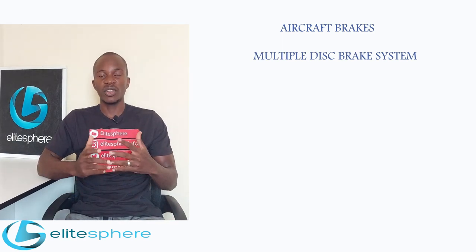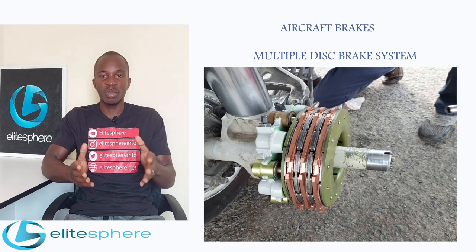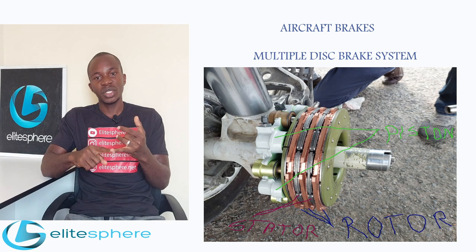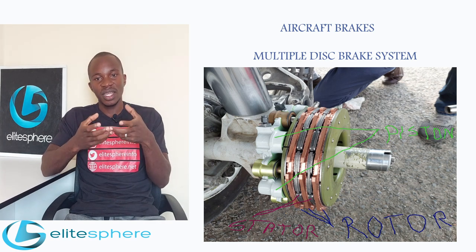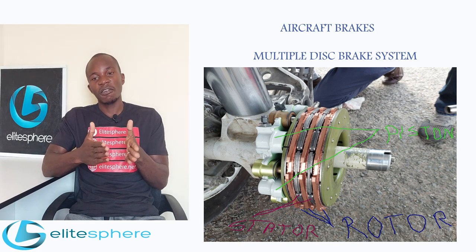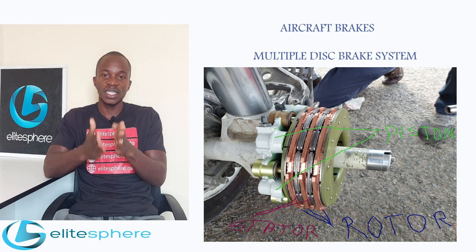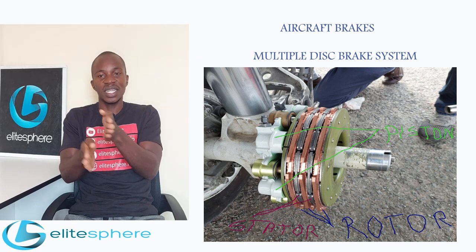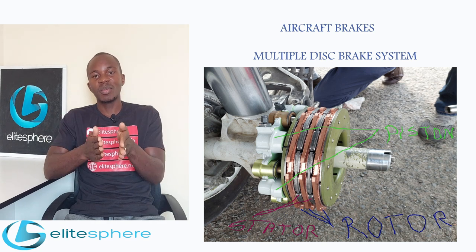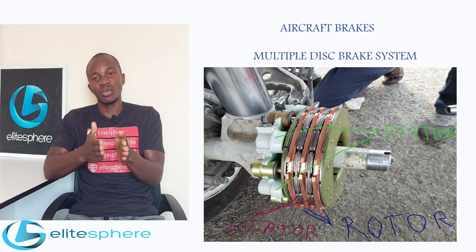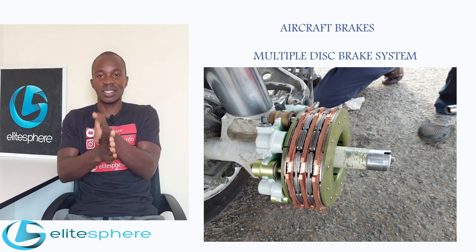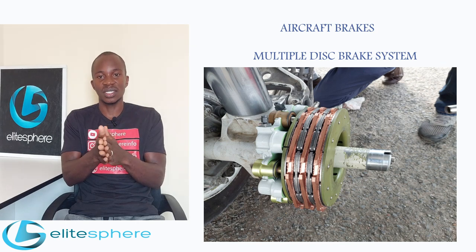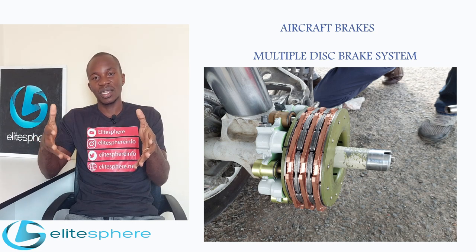The multiple disc brake system is made up of a bearing carrier, also called the brake housing. This housing has pistons and springs incorporated into it. We also have a pressure plate, and then an alternating stack of steel plates and copper or bronze plates alternating between the pressure plate and the back plate. The steel plates are the stators and the bronze or copper plates are the rotors. You can have three steel plates and three copper or bronze plates alternating, with a back plate at one end and a pressure plate at the other.